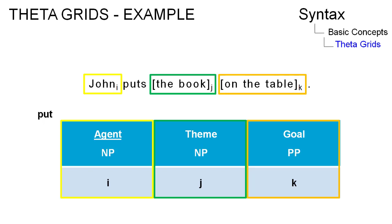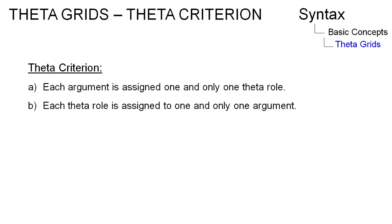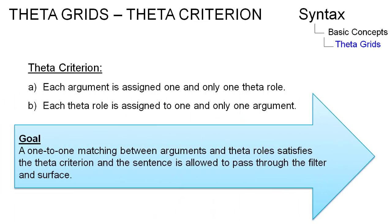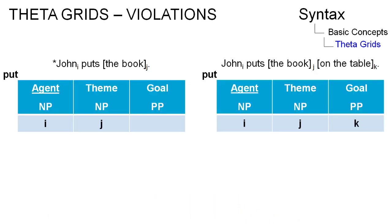The so-called theta criterion from generative grammar states that each argument is assigned one and only one theta role, and that each theta role is assigned to one and only one argument. The theta criterion is satisfied when there is a one-to-one matching between arguments and theta roles. Violations lead to ungrammatical sentences.